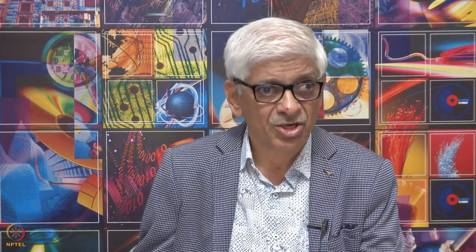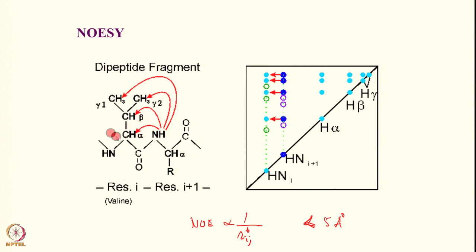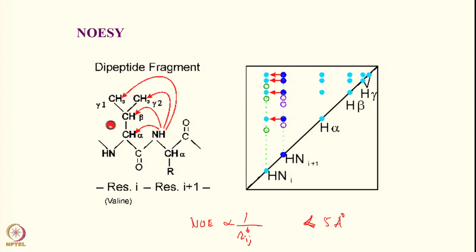Calculating the short distances in a given dipeptide, you can compare what is seen in the COSY versus the NOESY spectrum. In the COSY spectrum, you see NH to H-alpha because they are J-coupled, and H-alpha to H-beta, H-beta to the CH3 groups. In the NOESY you will also see NH to C-alpha H — approximately 3 to 3.5 angstroms. These distances depend on the dihedral angles in the dipeptide.